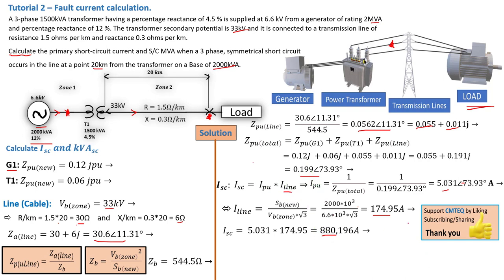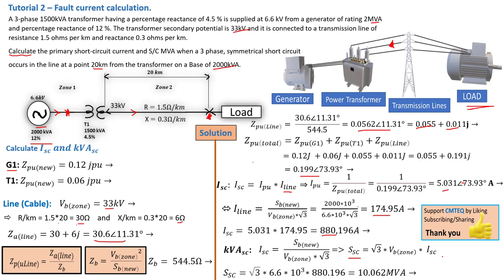Finally, we calculate the short circuit MVA using the same approach — replacing I line with the short circuit current. Short circuit MVA = √3 × 6.6 × 10³ × 880.2, calculated from the primary side of the transformer, giving a short circuit MVA of 10.06 MVA.